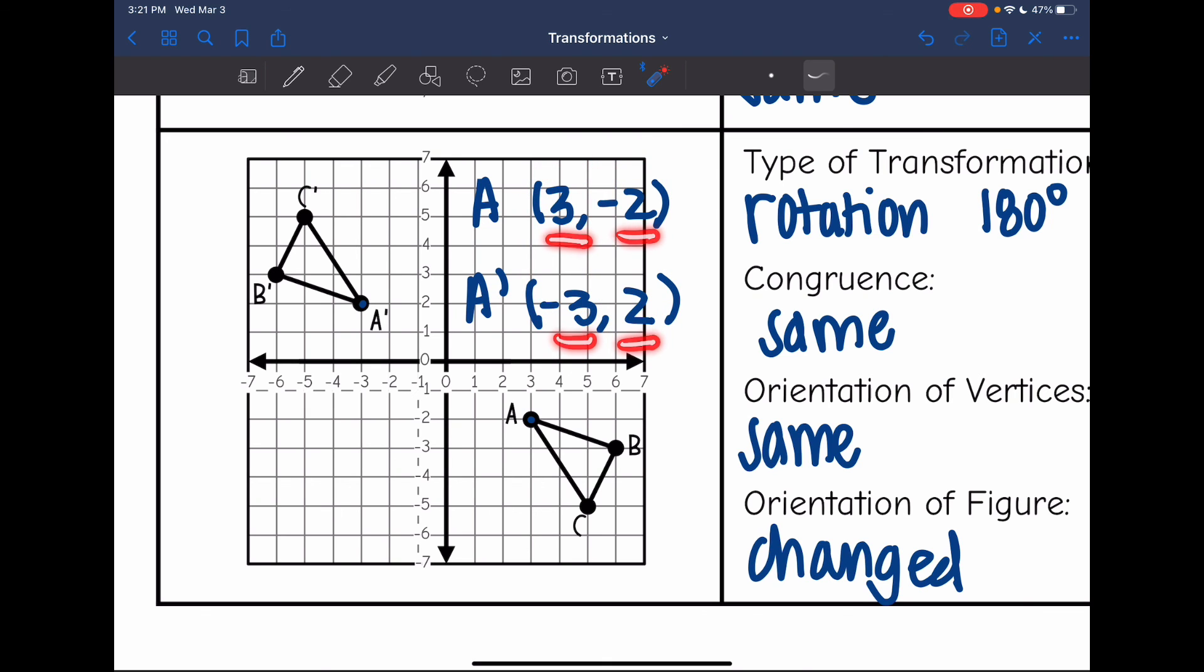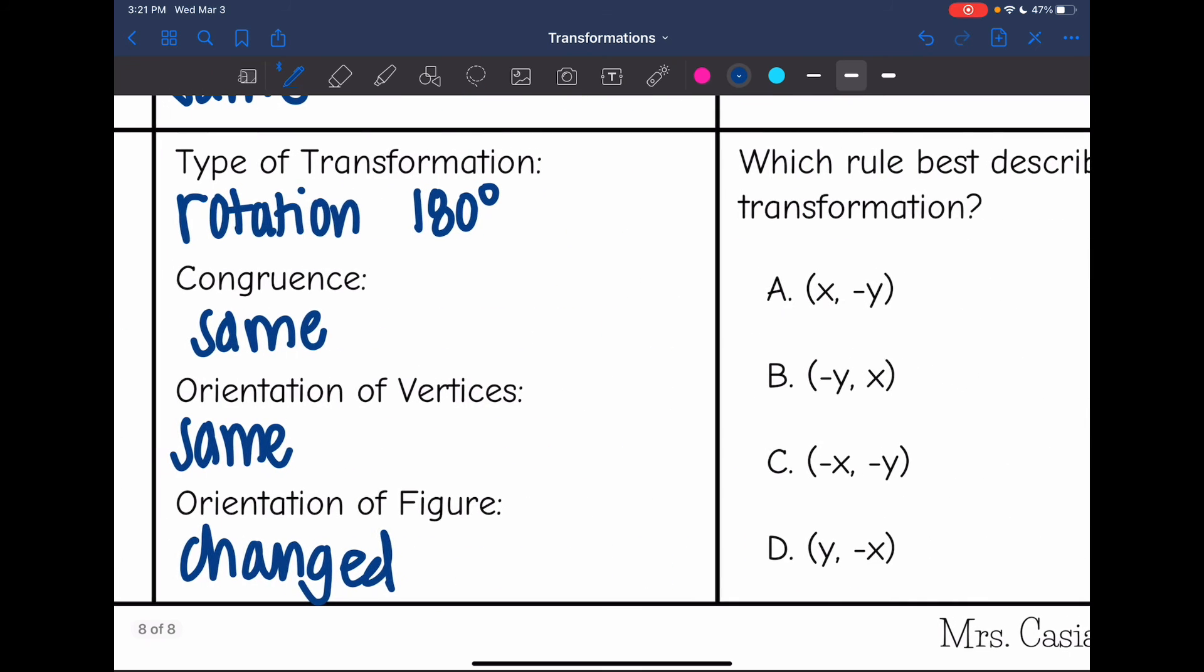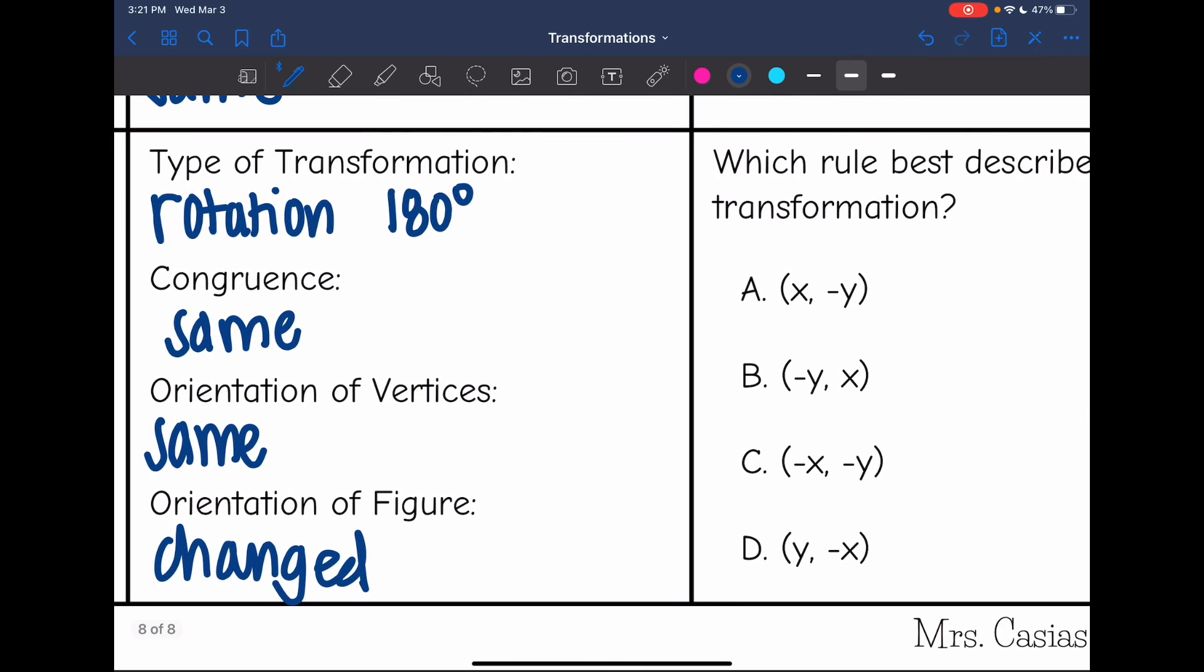So I didn't change the order, but both of my signs changed. I went from a positive to a negative and then a negative to a positive. So I need one where the order does not change. So I'm going to eliminate B and D. And I need both of the signs to change, which would be C.